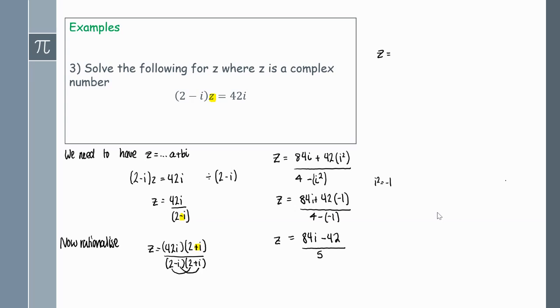I'm going to separate to make sure it's of the form a constant plus or minus a coefficient with i. So I take minus 42 over 5 plus 84 over 5i. Now this is in the correct form.